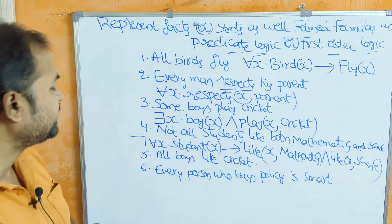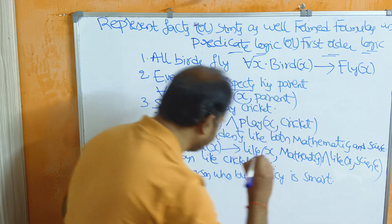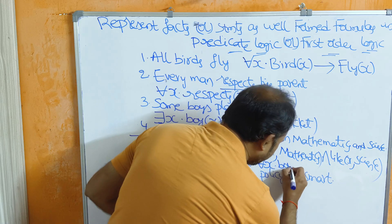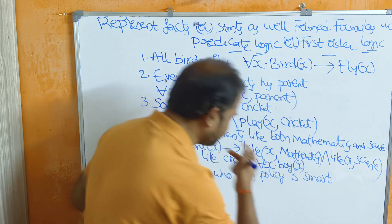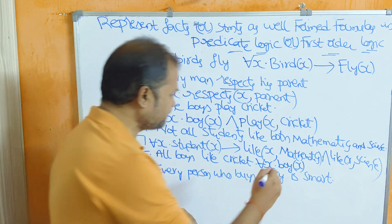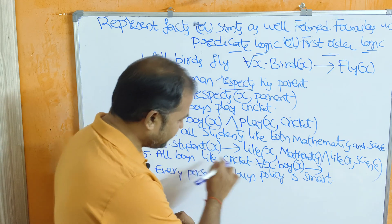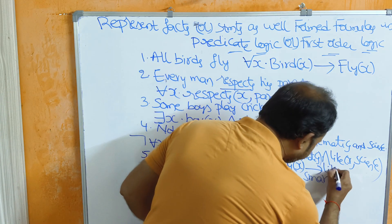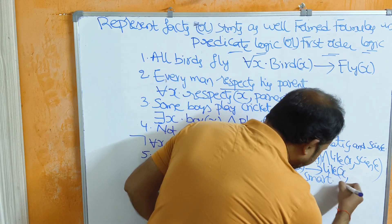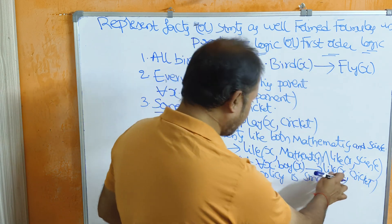Fifth statement: all boys like cricket. For 'all', we use the universal quantifier — for all X. All boys are represented by boy(X). Since the sentence contains 'all', we use the implication symbol. The predicate is 'like', so we write: for all X: boy(X) → like(X, cricket) — that boy, represented by X, likes cricket.